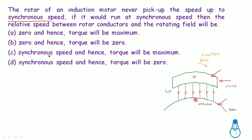When the relative speed is zero, the torque will be maximum — wait — the torque will be zero. EMF is induced, the field is produced, and the torque results from the interaction. So the torque will be zero when there is no relative speed.